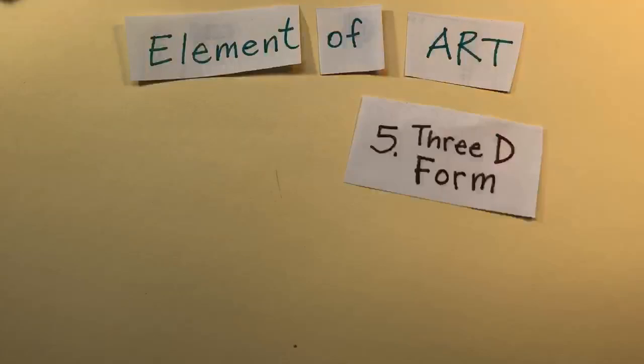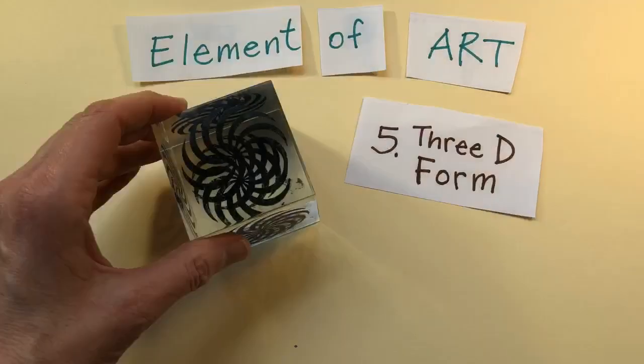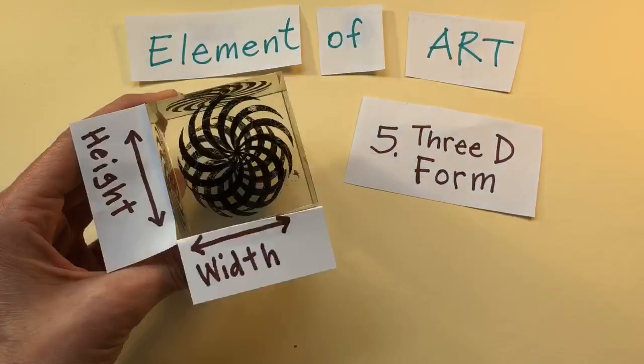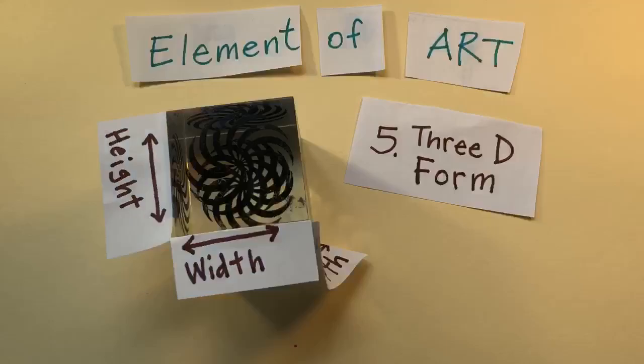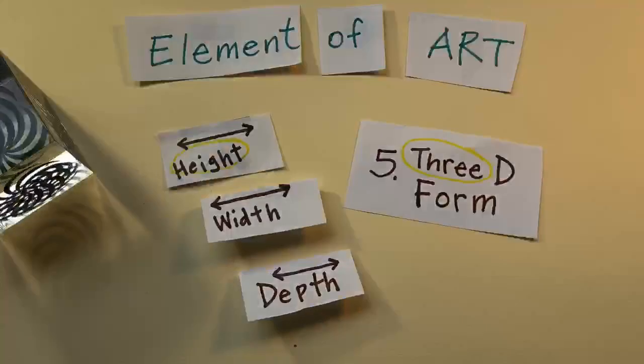The fifth element is 3D form. This cube has height, width and depth. That's what the three stands for. Height, width and depth.